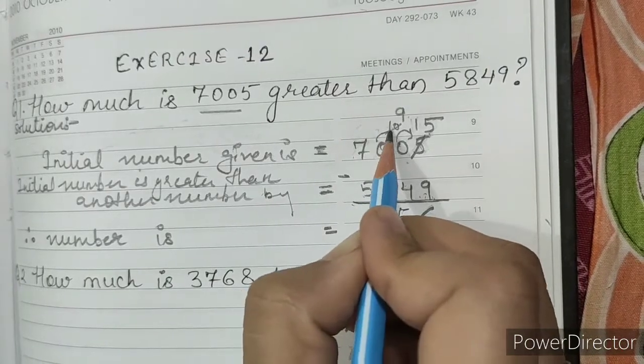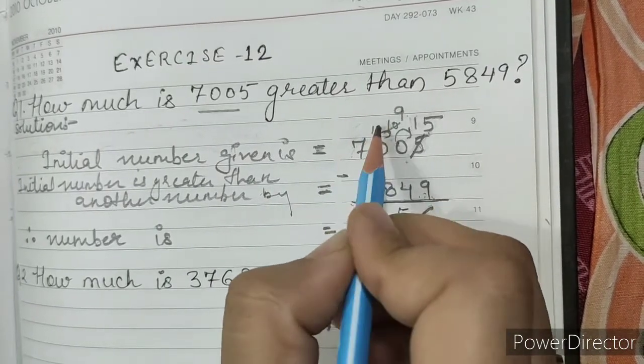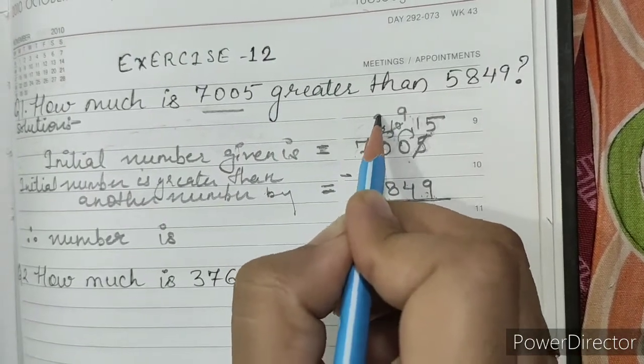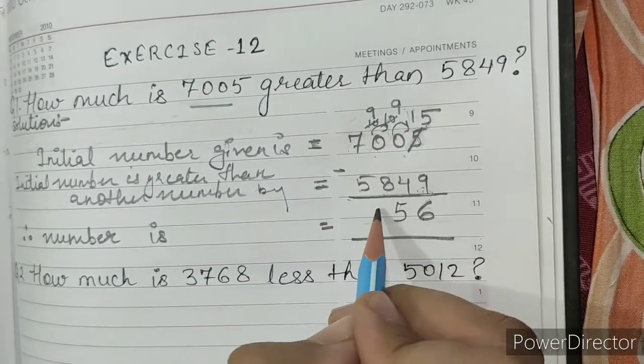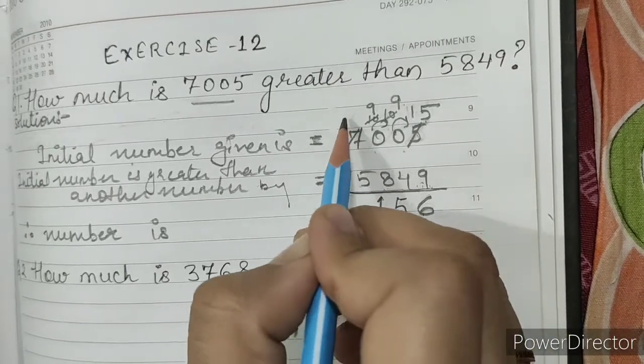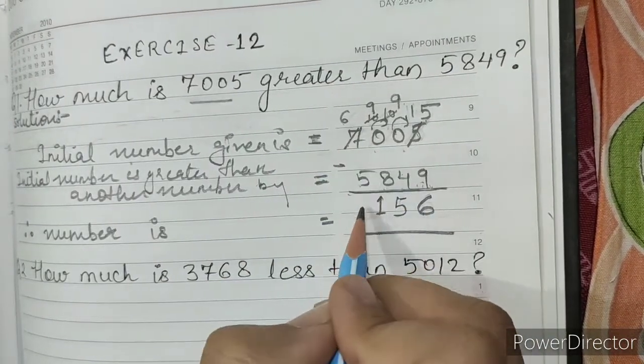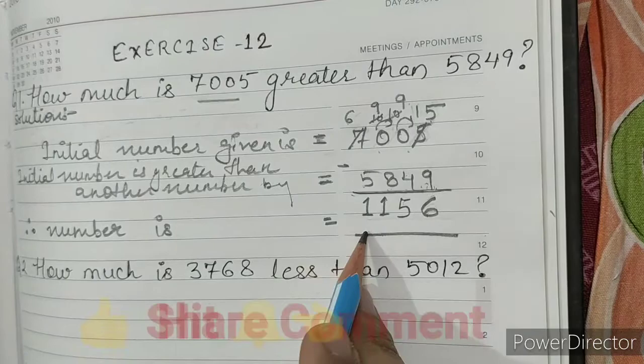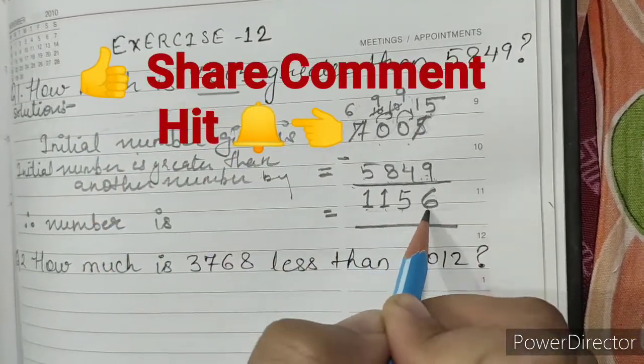We have borrowed from here also. It was 10 earlier. Now, it will become 9. 9 minus 8 is 1. And, 6. 6 minus 5 is 1. So, our answer is 1156.